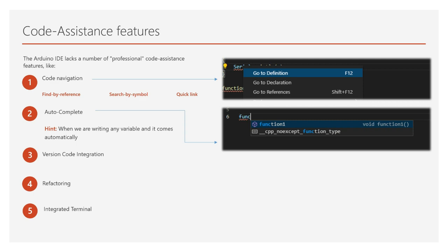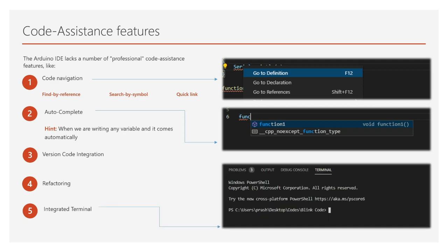The next feature which Arduino IDE lacks is the integrated terminal. Whether you use Bash or Windows CMD, an integrated terminal can save you lots of time. These tools allow you to run your favorite commands without ever swapping windows. Once you take time to learn these tools, they make programming in C, C++, or any language so much more efficient — helping you produce better code faster.